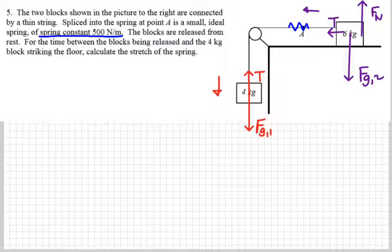On the red object, the one that's hanging, I'm going to write that the net force equals the weight minus the tension. And then on the other I'm going to write that the net force is simply equal to the tension.